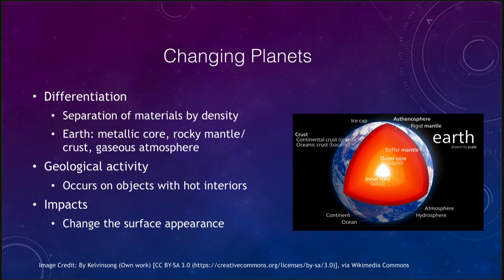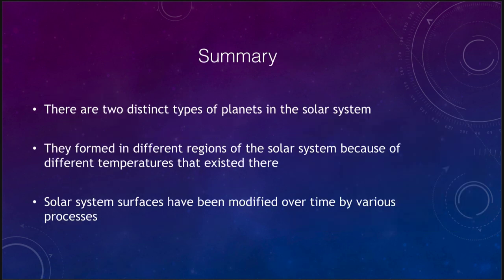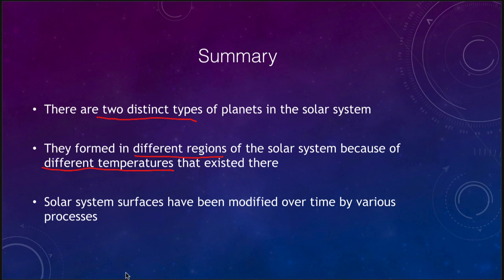To summarize: we have discussed two distinct types of planets — the terrestrial planets, or Earth-like planets, and the Jovian planets, or Jupiter-like planets. They formed in different regions of the solar system because of different temperatures: rocky and metallic planets formed close to the Sun giving us the terrestrial planets, while gaseous and icy planets formed further away where it was much colder. Solar system surfaces have been modified over time by various processes, including cratering and geological activity.